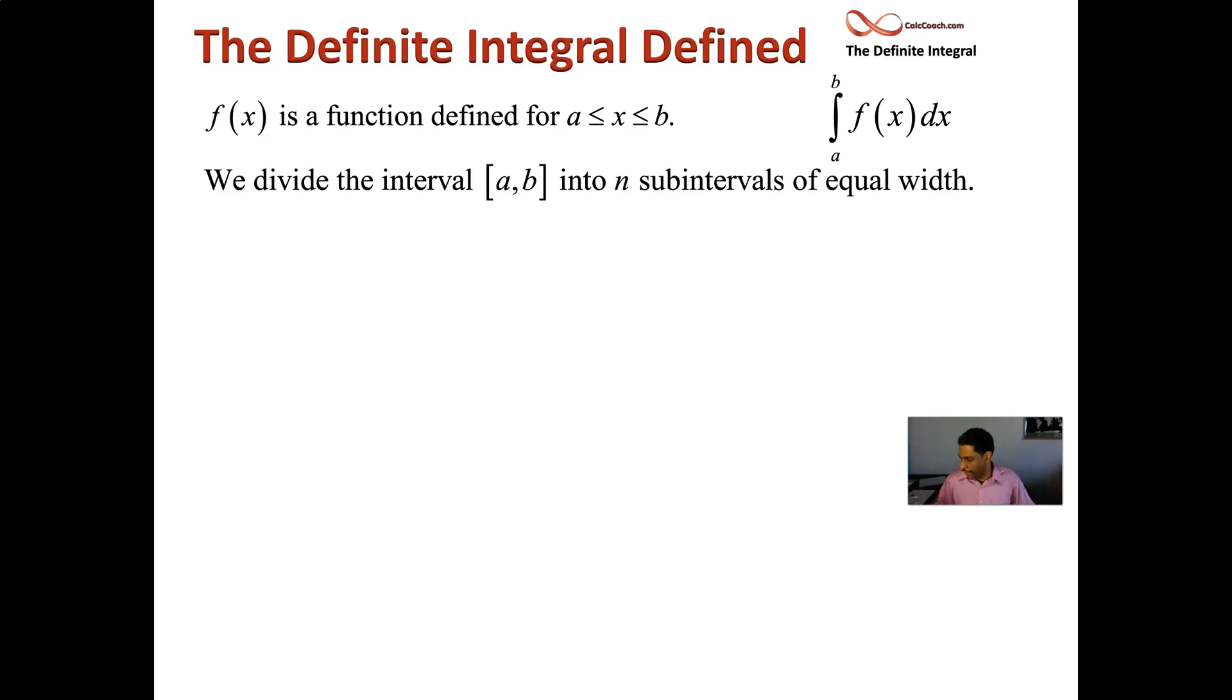And here's what we do. We divide that interval from a to b up into subintervals of equal width. And so we have a to b and we're going to divide it into n subintervals. So each interval then would be the total distance b minus a divided by n. This width is called delta x.